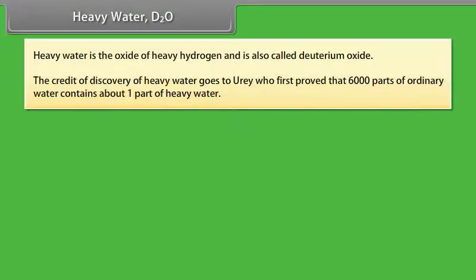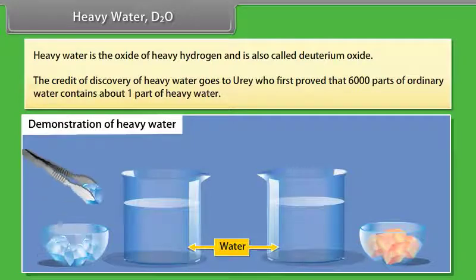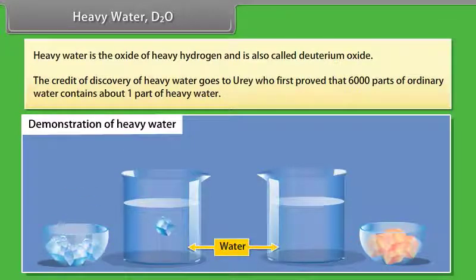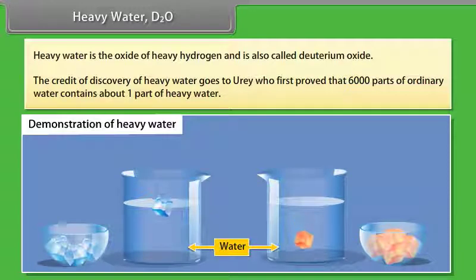Demonstration of heavy water: First, take two beakers filled with water. Drop an ice cube which is blue in color in the first beaker and see that ice floats on water. In another beaker, drop another ice cube which is red in color of heavy water D2O. You will see that the ice cube sinks in the water. This is due to the fact that deuterium is a heavier isotope than hydrogen and it changes physical and chemical properties of water.